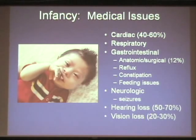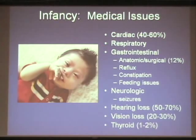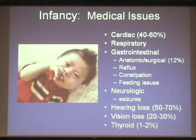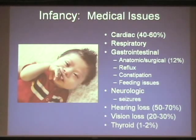Vision issues are also higher in Down syndrome, and we try to correct all correctable problems during childhood. The thyroid gland is frequently a problem — up to 1-2% have low thyroid at birth, and over a lifetime up to 30-40% develop thyroid problems. Thyroid hormone is critical for brain development before birth and during infancy, so missing it is not affordable. All babies in the United States are screened at birth, and babies with Down syndrome are screened twice in the first year and every year thereafter for life.